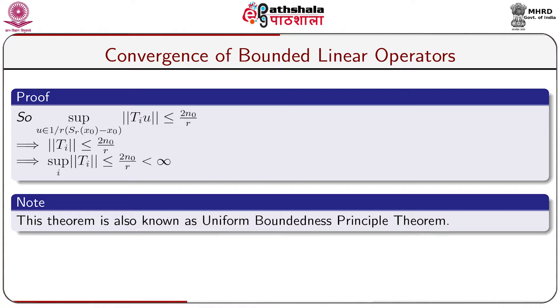This theorem is known as the Uniform Boundedness Principle theorem. Up to this point in Module 3 of Chapter 5, we have learned the convergence of a sequence of bounded linear operators and the famous Banach-Steinhaus theorem, also called the Uniform Boundedness Principle. We shall now discuss applications of the Uniform Boundedness Principle.